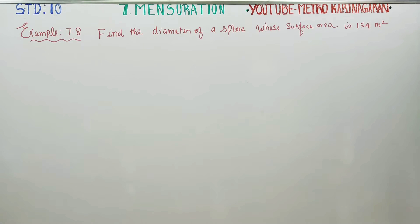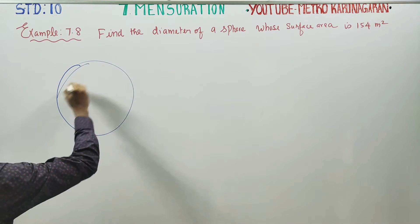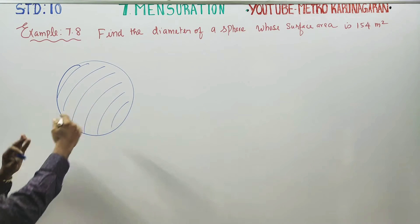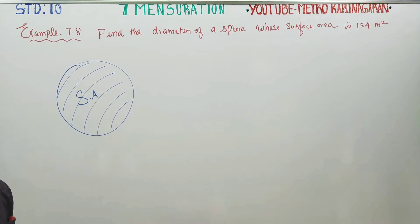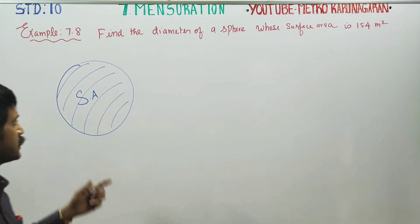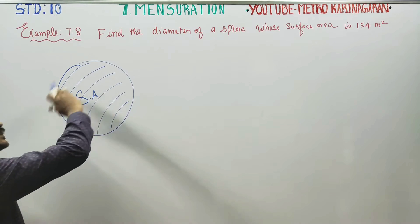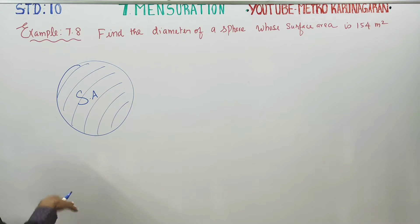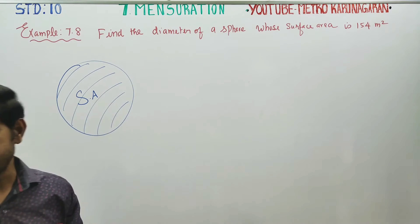Before entering into the sum, let us understand the sphere. For a sphere, there are many names for its area: curved surface area (CSA), total surface area (TSA). The general name I will use here is simply 'surface area.'